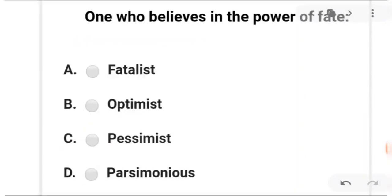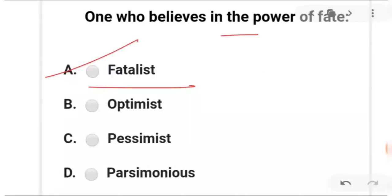Next: one who believes in the power of fate. A is fatalist, B is optimist, C is pessimist, and D is parsimonious. The answer is A — fatalist: a person who believes in fate.